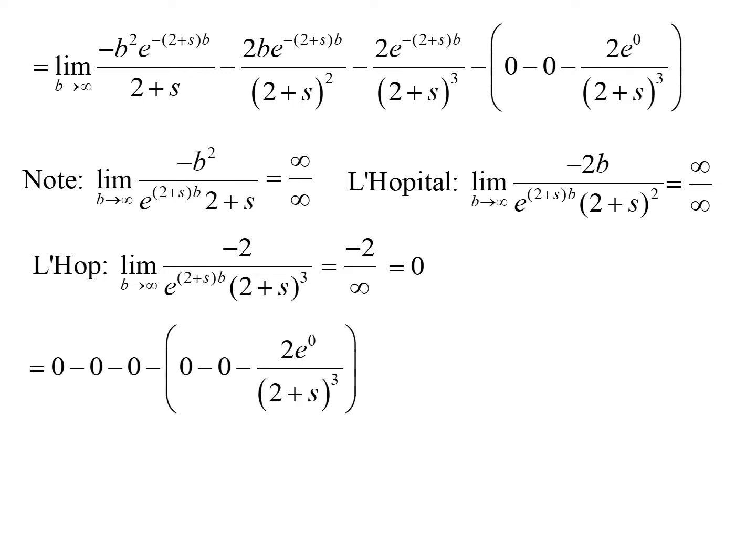So we get 0 minus 0 minus 0, and the remaining term is negative 2 e to the zero over 2 plus s cubed. The two negatives cancel to become positive, and simplifying gives us 2 over 2 plus s cubed. We should note the assumption that s must be greater than negative 2, because if s were less than negative 2 then 2 plus s would be negative and would change our approach. The result holds when 2 plus s is positive, i.e., when s is greater than negative 2.